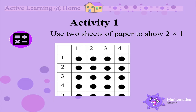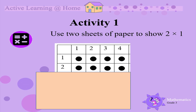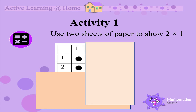Now use the two sheets of paper to show two times one. Do this now. You should cover everything below the row labelled two and cover everything to the right of the column labelled one. Therefore, two times one is two.